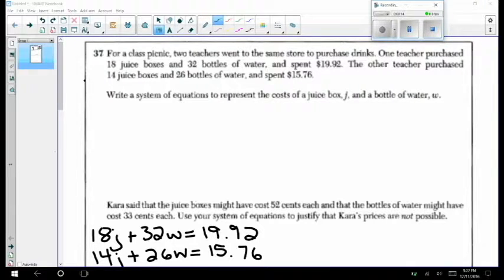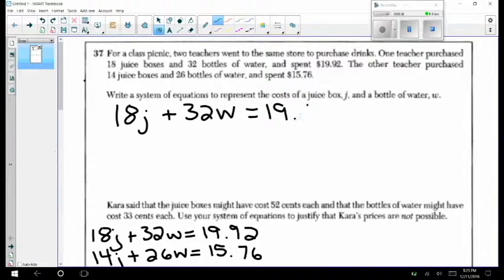In this system of equations we'll be purchasing 18 juice boxes and we'll let J represent the cost of a juice box. We'll also be purchasing 32 water bottles letting W represent the cost of a water bottle. In total we'll spend $19.92.